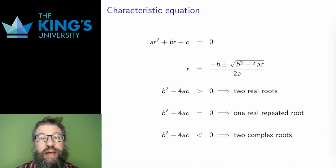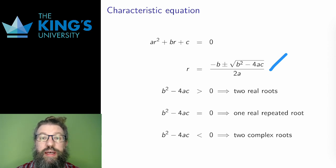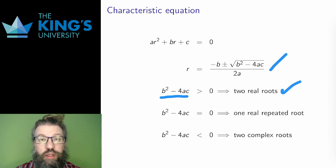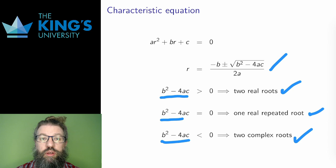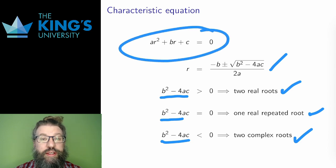This is called the characteristic equation associated to the DE. It turns out that understanding this quadratic is enough to understand the DE. To solve the quadratic in general, I use the quadratic formula. There are three cases depending on the sign of the discriminant — the mathematical name for the piece under the square root. If the discriminant is positive, there are two real roots. If the discriminant is zero, there is one repeated real root. And if the discriminant is less than zero, there are two complex roots. I look at all three cases, and each will give solutions to the DE depending on the coefficients a, b, and c. I've turned a DE into an algebra problem, and one that I know how to solve.